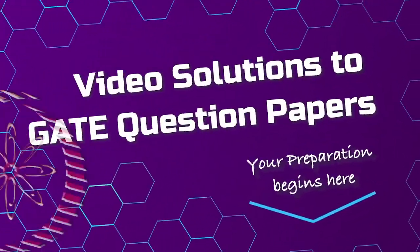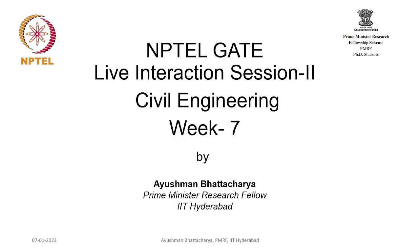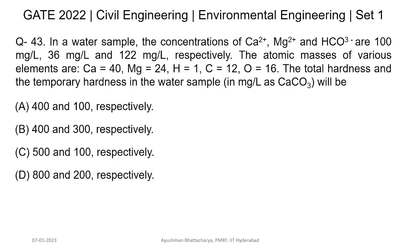Good evening everyone. This is week seven, and in this session we will focus mainly on total alkalinity and hardness questions. The first question comes from GATE 2022. It states: in a water sample the concentration of Ca2+, Mg2+, and bicarbonate are 100 mg/L, 36 mg/L, and 22 mg/L respectively. The atomic masses are calcium 40, magnesium 24, hydrogen 1, carbon 12, and oxygen 16. Find the total hardness and temporary hardness.